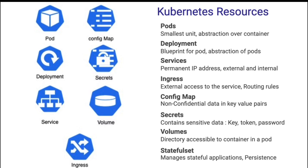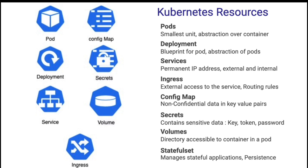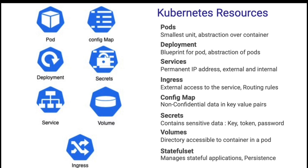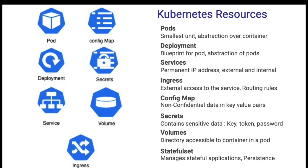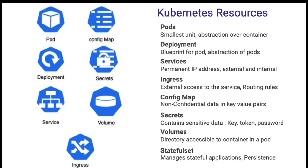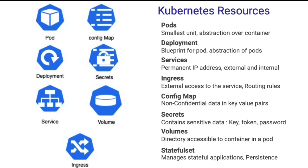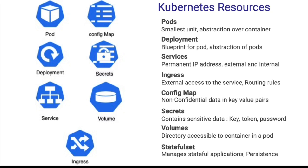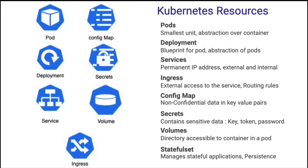Deployment is the blueprint for a pod. Each pod gets a unique IP in Kubernetes, but if a pod is destroyed, that IP is also destroyed and during recreation the pod gets a new IP. If any other application is referring to that pod, you'd have to change the IP address every time — that's where services come in. A service refers to the pods and has a permanent IP, so even if a pod goes down, the service IP remains and there's no need to change the IP in other application configurations. We can create two types of services: external and internal.